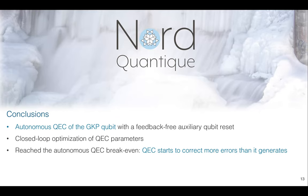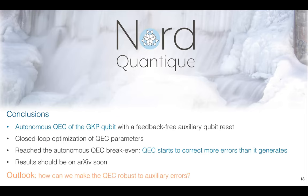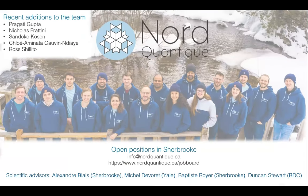In conclusion, we've demonstrated autonomous quantum error correction of the GKP qubit with a feedback-free reset. We've performed closed-loop optimization of the quantum error correction parameters, and we are currently working on including more things in this optimization. The gain from quantum error correction is still very small but much better than three months ago — we are now correcting more errors than we generate. The results should be on arXiv very soon, hopefully next month. The big remaining question is how to make quantum error correction robust to auxiliary qubit errors.